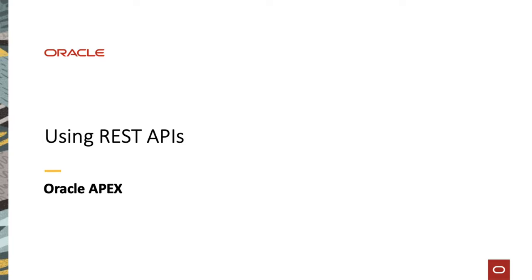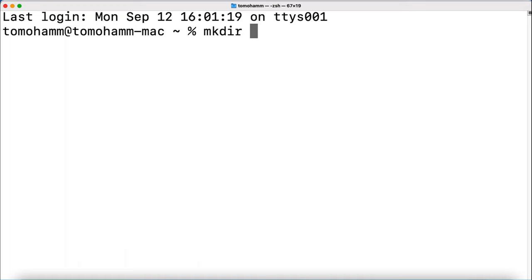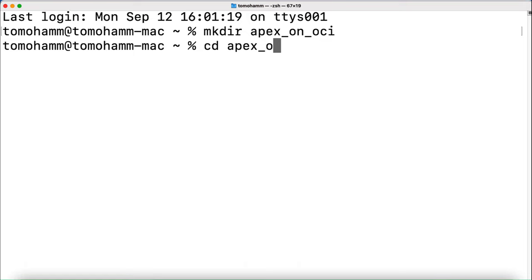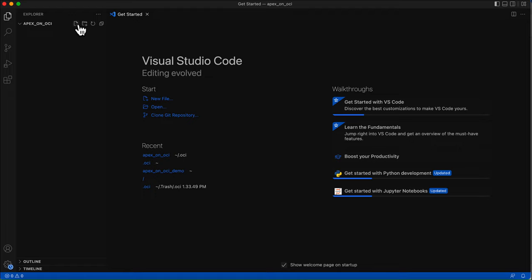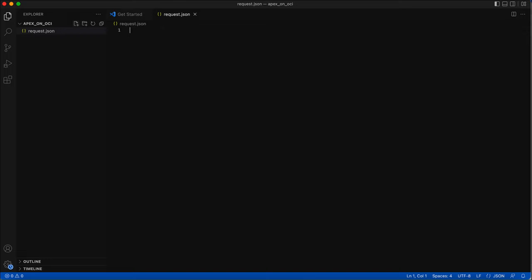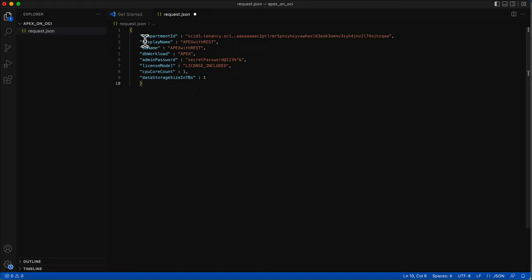The next section is provisioning Apex on Oracle Cloud using REST APIs. The Oracle Cloud Infrastructure APIs are typical REST APIs that use HTTPS requests and responses. In this demo, I create a shell script which uses the curl utility to make a REST request to OCI to create an autonomous database with workload type as Apex. I'll start with creating a working directory. First, I'll create a request.json file. This file contains a JSON object containing the details of the Apex instance that will be created. This JSON object will be sent as the request body.